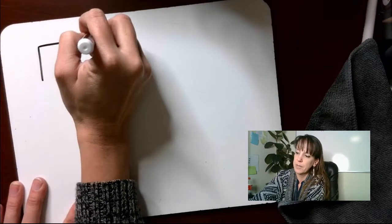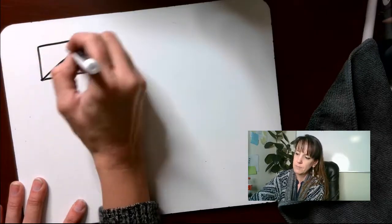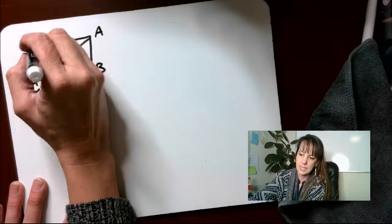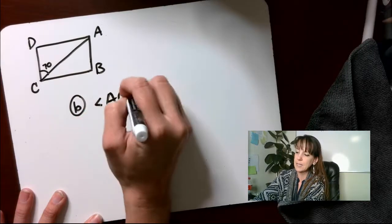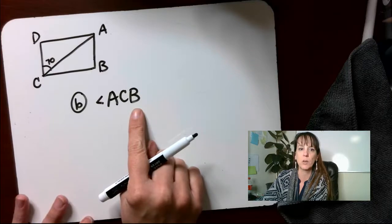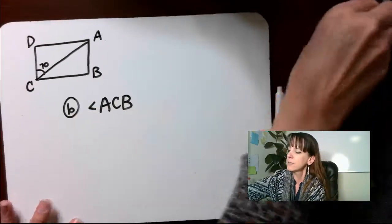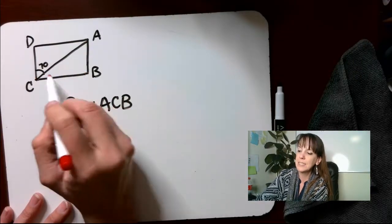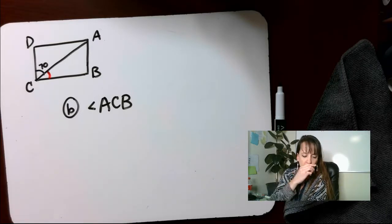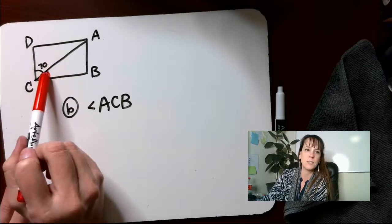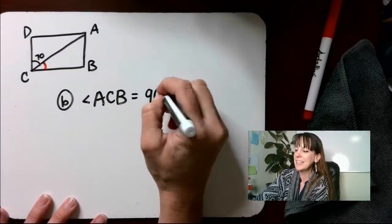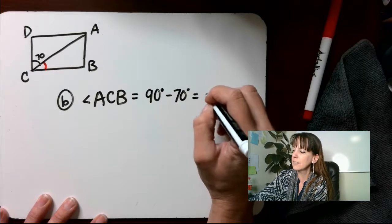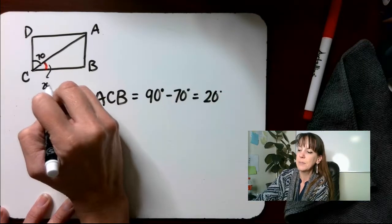For questions B through D, refer to this figure — I'll draw it here with points A, B, C, D, and this angle is 70 degrees. For B: what is the measure of angle ACB? That's this angle right here. We presume this is a right angle, so angle ACB equals 90 degrees. That means 90 minus 70 degrees gives us 20 degrees, so this angle is 20 degrees.